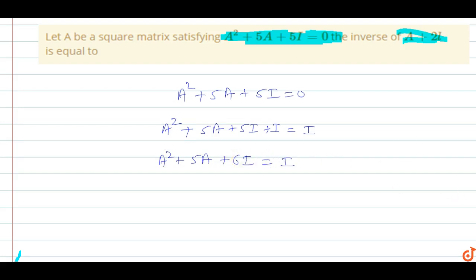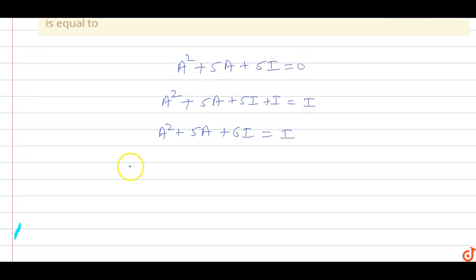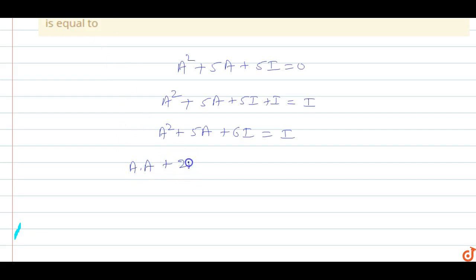Here A² equals A·A, so we write A·A + (2A + 3A) + 6I = I, which we can rewrite as A·A + 2A + 3A + 6I = I.